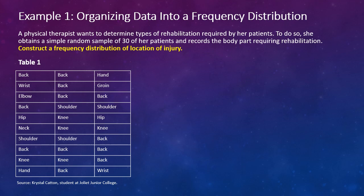Example 1: Organizing data into a frequency distribution. A physical therapist wants to determine the types of rehabilitation required by her patients. To do so, she obtains a simple random sample of 30 of her patients and records the body part requiring rehabilitation. Construct a frequency distribution of location of injury. The first table — Table 1 — is the raw data. She just looked at each folder or file from her patients and focused on what was the specific body part or region requiring rehabilitation.